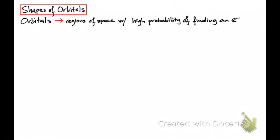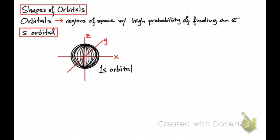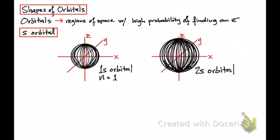There are four different types of orbitals: the S orbital, the P orbitals, the D orbitals, and the F orbitals. The S orbital, when viewed in three dimensions, is a sphere. For example, this is the 1S orbital — an S orbital is spherical in shape. The 1S orbital tells you that n=1, so the first energy level has the 1S orbital.